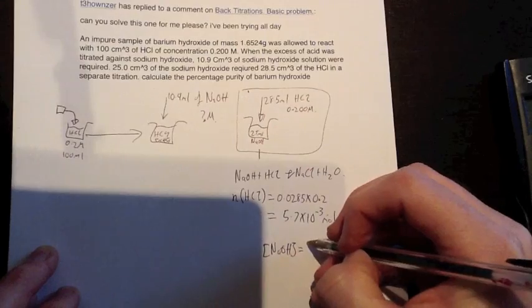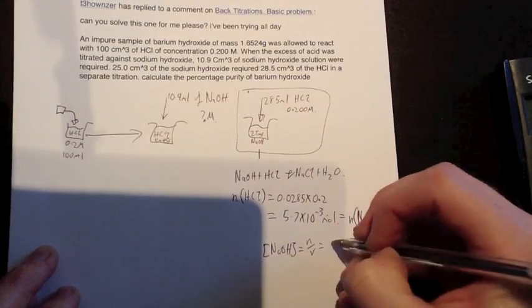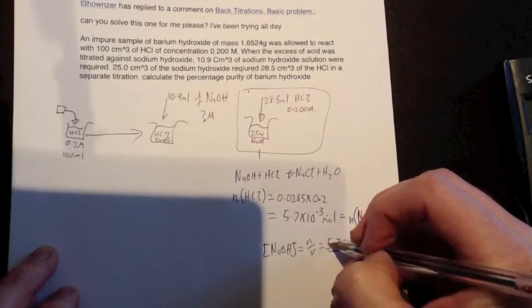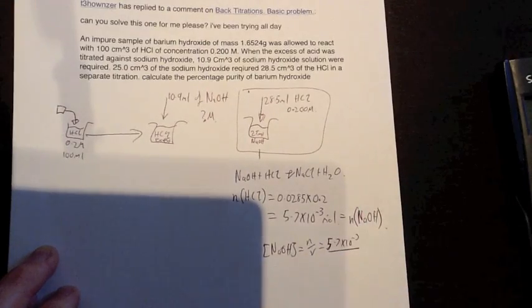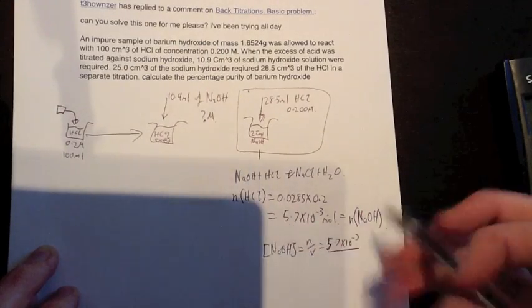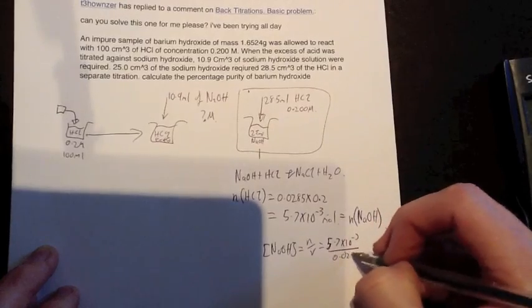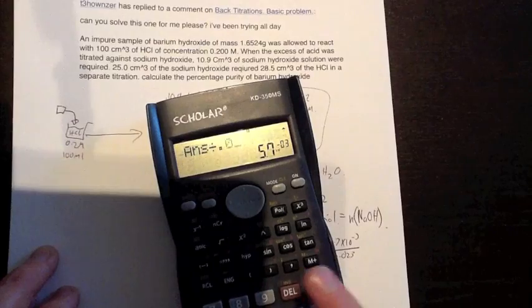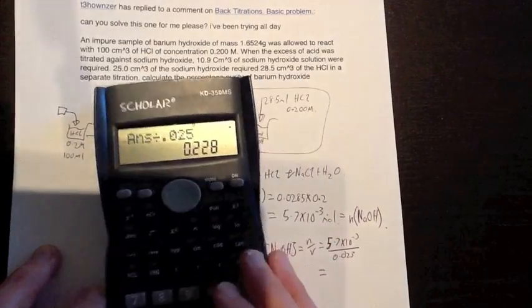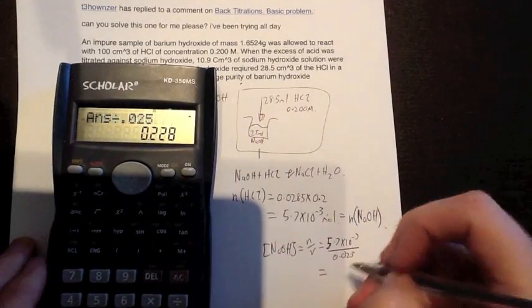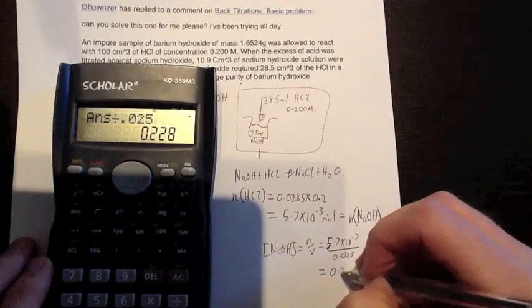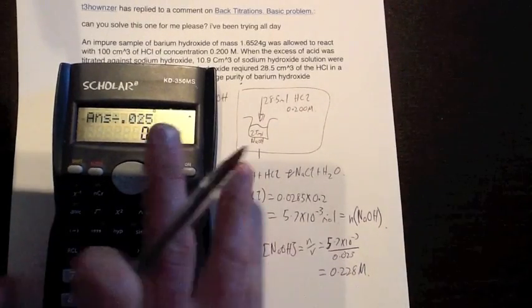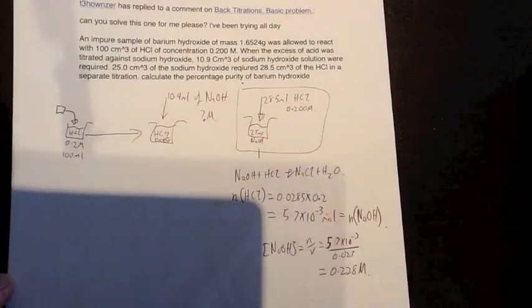And we can find out the concentration of NaOH by using this as our moles. So N over V equals 5.7 times 10 to the power of negative 3 divided by, what's our volume? 25 mL, so 0.025. So we divide this by 0.025 and we find out our concentration of our sodium hydroxide is 0.228 molar. This is the concentration of our sodium hydroxide from our separate equation.